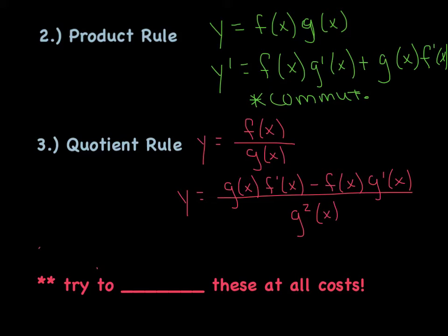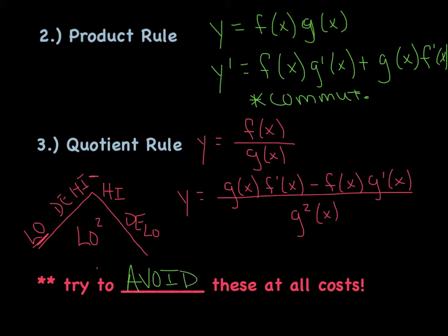The one way I think of it is, I always say it's low d high and minus high d low. So you start at the bottom of the mountain here and work your way up to the top where there's a minus sign, and then you work your way back down the mountain, and that's all over low squared. So I kind of have that visualization in my head, and that helps me always remember the order. And what I want to stress is, although we love these rules and we're pretty good at them, I want you to try to avoid, and if you take anything out of today's video, I want you to avoid these at all costs.